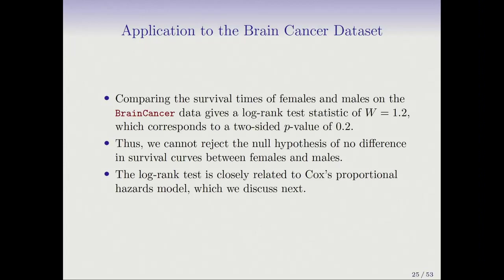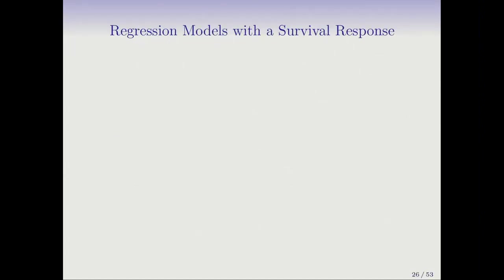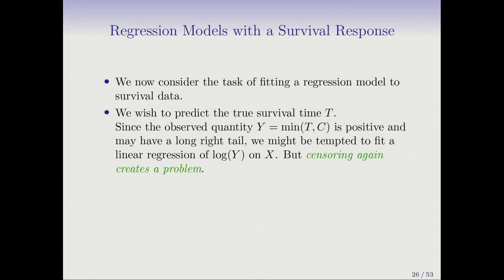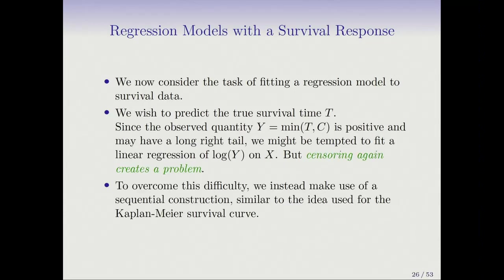So that's a log rank test. It's closely related to Cox's proportional hazards model, which we discuss next. So we've seen the one sample and how to summarize it with Kaplan-Meier. We've seen the two sample problem where we use a log rank test and now we'll move up to regression, which is sort of the more general, more commonly occurring situation. So again, we have our survival time and we observe the minimum of the actual survival time and the censoring time. Again, if you think about it as a regression, a supervised learning problem, we would be tempted maybe to regress Y on X. Or maybe since Y has a long right tail typically, being a survival time, maybe log Y. But again, the censoring creates a problem. We can't just do that because we don't know how to deal with the censoring.